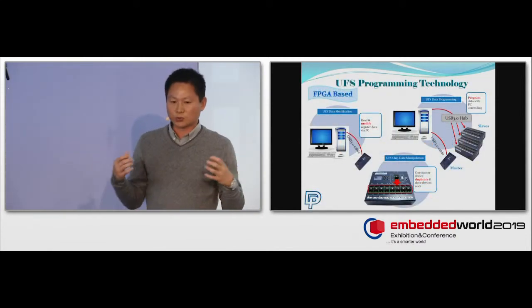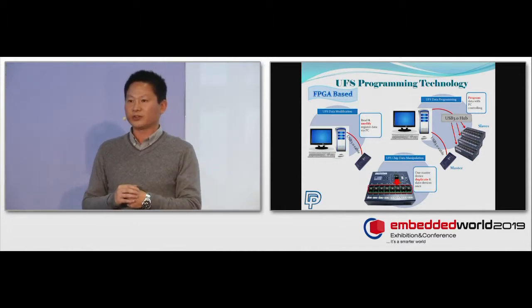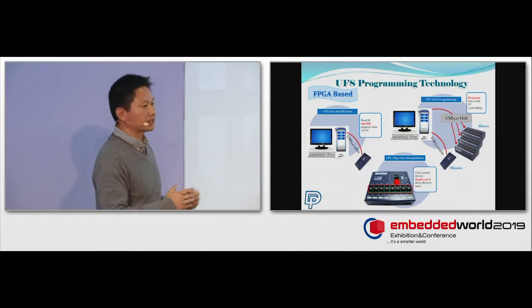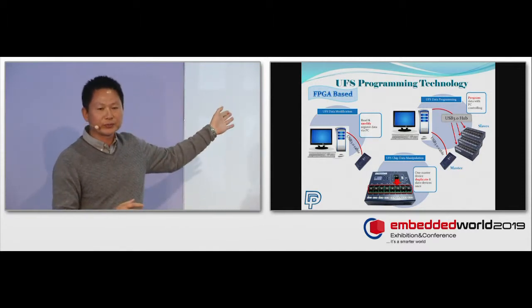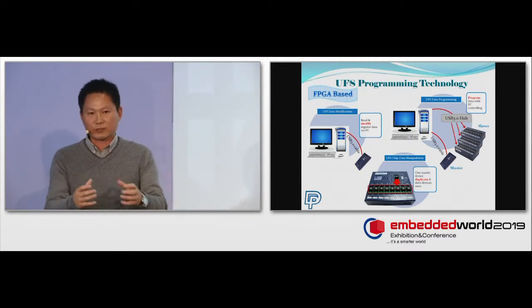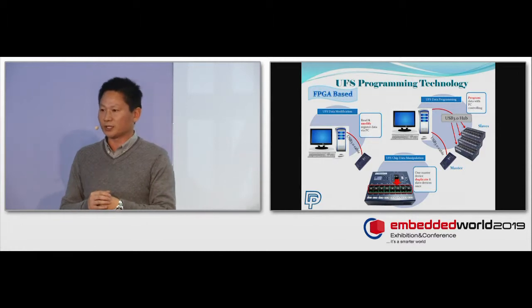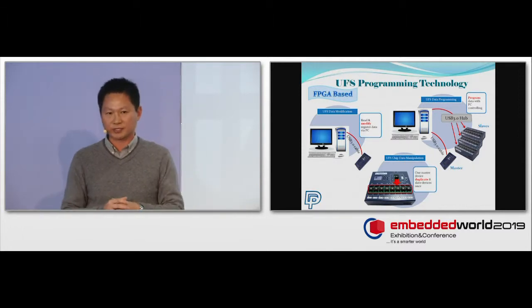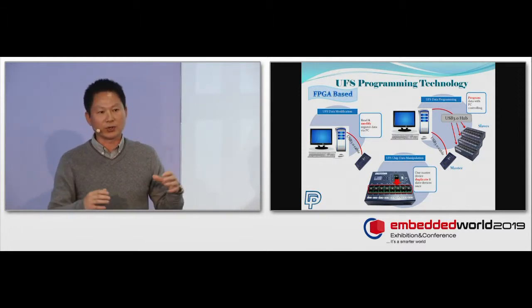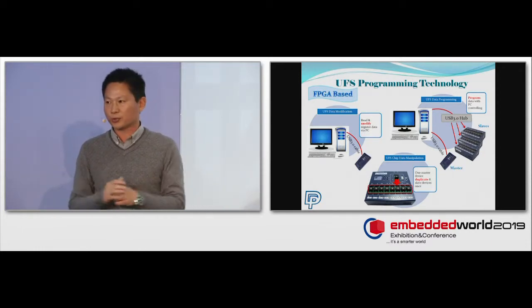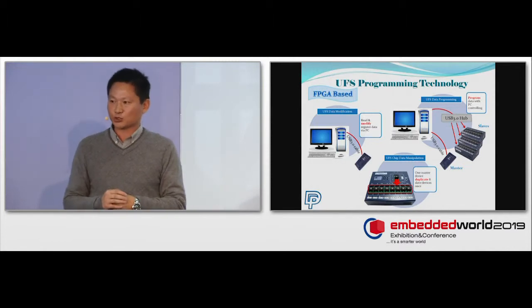So what do we do and what do we have for UFS memories for programming product? As you can see in the slides, we have engineering programmer, which allows users to read and write the data from one single chip with the PC. We have a gang programmer, which allows you to duplicate from one single chip to eight chips at the same time. And we also allow one PC to control multiple programmers so that you can program 48 or 96 chips at the same time.